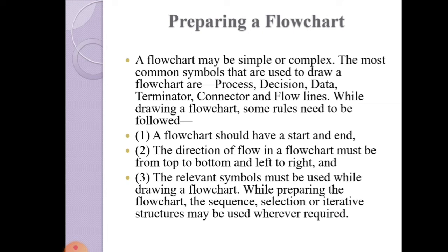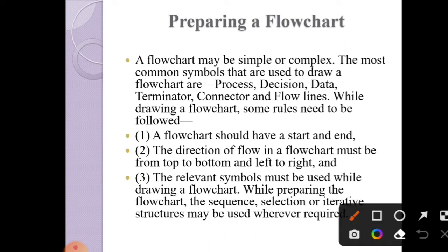When preparing a flowchart, it may be simple or complex. The most common symbols used to draw a flowchart are: process, decision, data, terminator, connector, and flow lines. These are the important symbols used in a flowchart. While drawing a flowchart, some rules need to be followed.